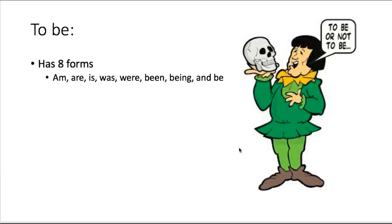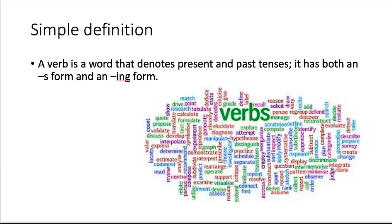The point of course is that you can use your knowledge of verb inflections and the criteria form that can help you define verb just as it did with a noun. And we can come up with a simple definition by using that. So we have a definition that says the verb is a word that denotes present and past tenses. It has both an s form and an ing form. So both regular and irregular verbs occur in these two forms, and the fact that they do is what makes them a verb.